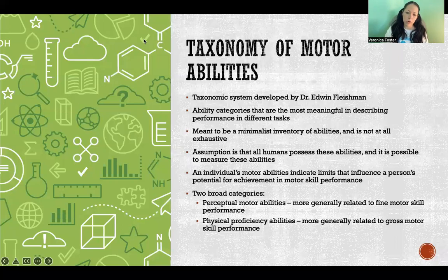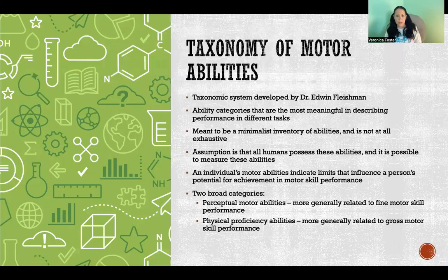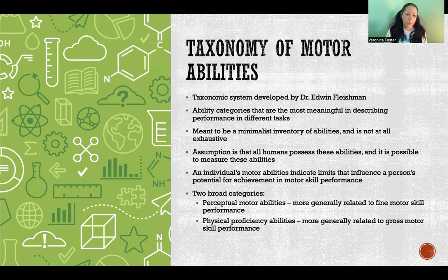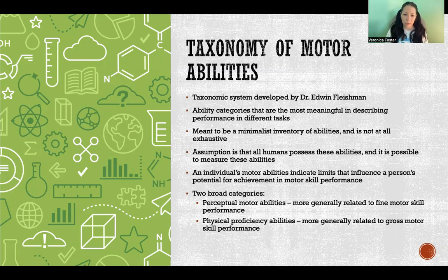A taxonomy of motor abilities has been developed by Dr. Edwin Fleischman. The goal when this taxonomic system was developed was to create a minimalistic inventory of abilities — not all-inclusive, but including the minimum ones so that we can better classify motor abilities for the purposes of teaching, learning, and motor control.